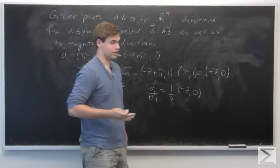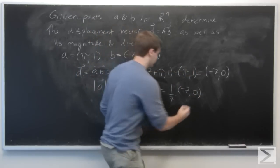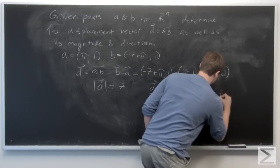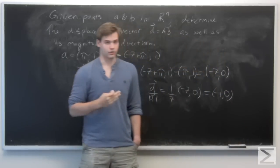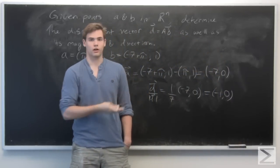But this is easy enough to solve for right away or simplify: the unit vector is minus 1 comma 0.